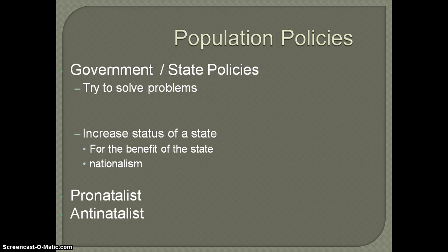Most of the time, the government is looking to try and solve some sort of perceived problem — whether it's an actual problem, a problem they think they have, or maybe they look into the future and see a particular problem. A lot of times it's going to be more about the future because with population, there's really nothing you can do right now. It's only things you can do down the road, whether it's to encourage or discourage people from having children.